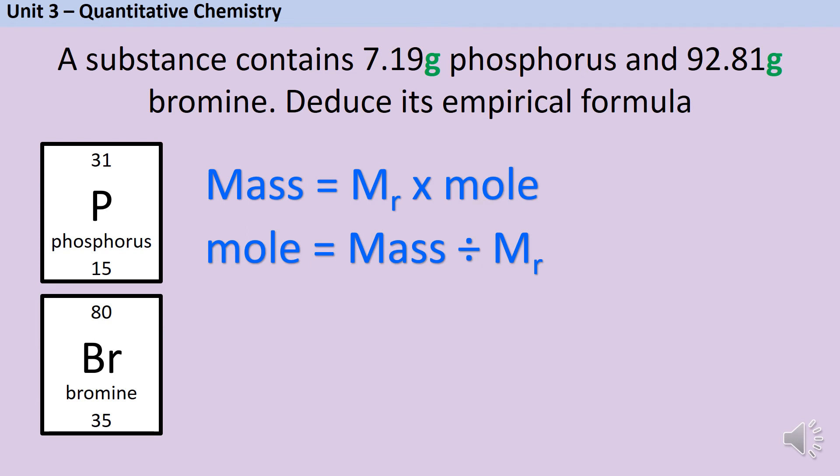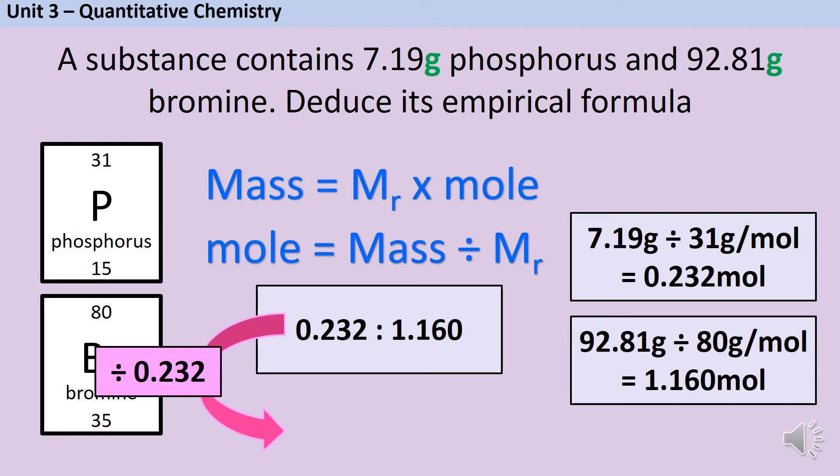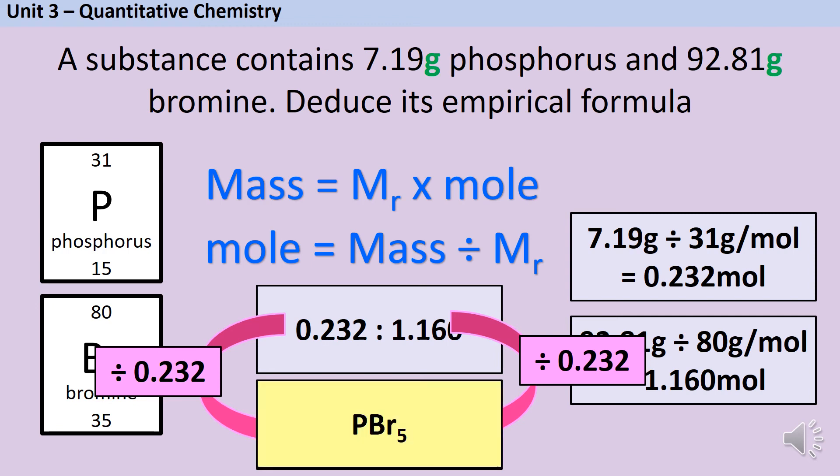So the 7.19 grams divided by 31, which is the relative atomic mass of phosphorus, gives me 0.232 moles, and 92.81 grams divided by 80 gives me 1.160 moles of bromine. If I put those in a ratio and then simplify it by dividing by 0.232, because I'm always dividing by the smaller of the two numbers, I get a 1 to 5 ratio. I need to write this as a chemical formula so my final answer is PBr5.